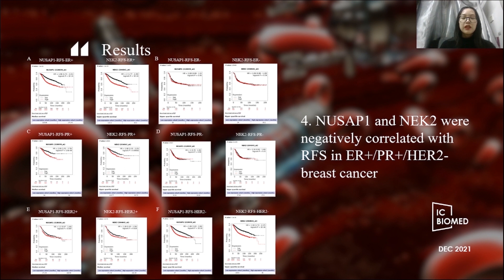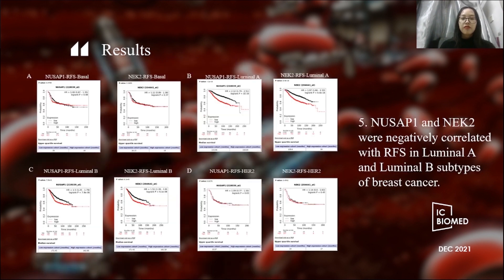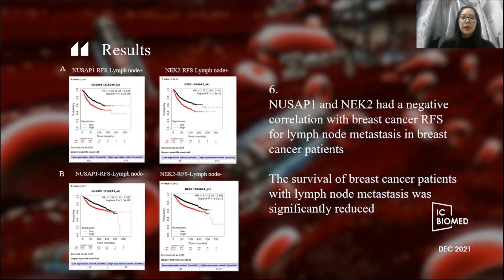As shown in the figure, NASAP1 and NASAP2 were negatively correlated with RFS in ER positive, PR positive, HER2 negative breast cancer. From the chart on the left, we can see that gene expression is also negatively correlated with Luminal A and Luminal B subtypes of breast cancer.